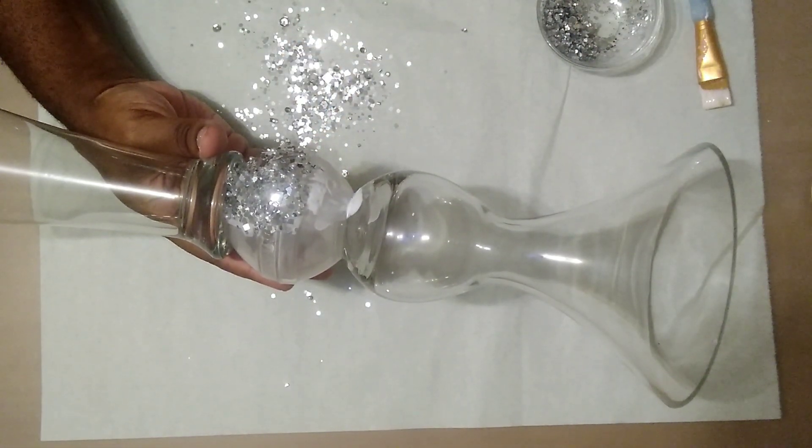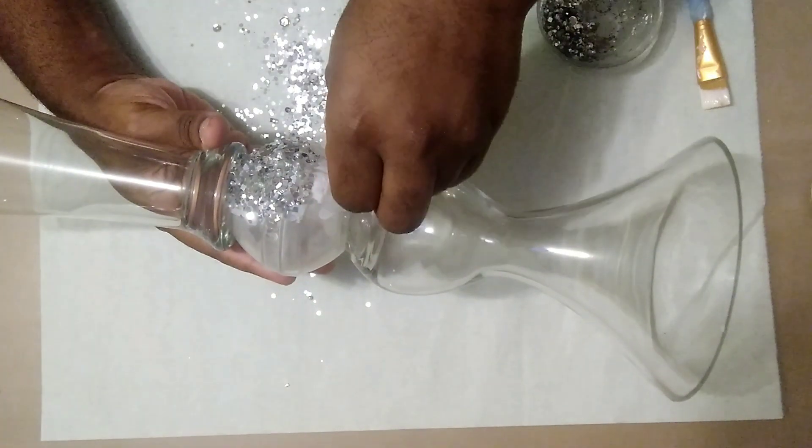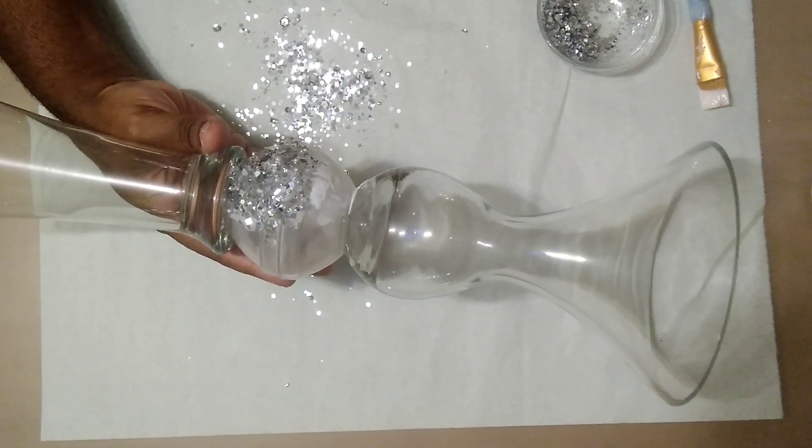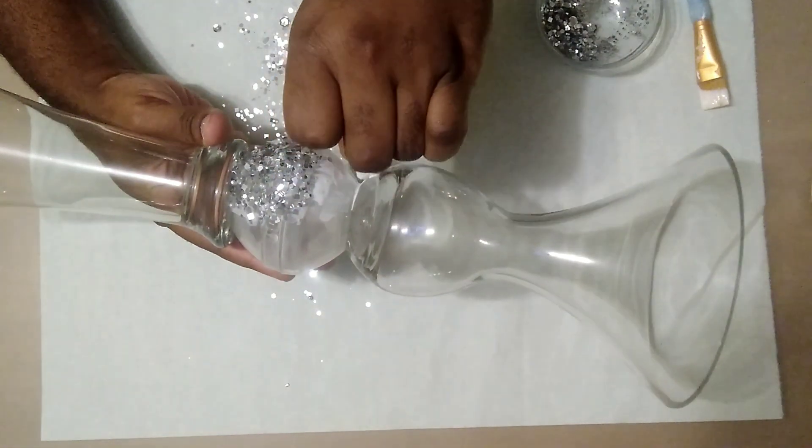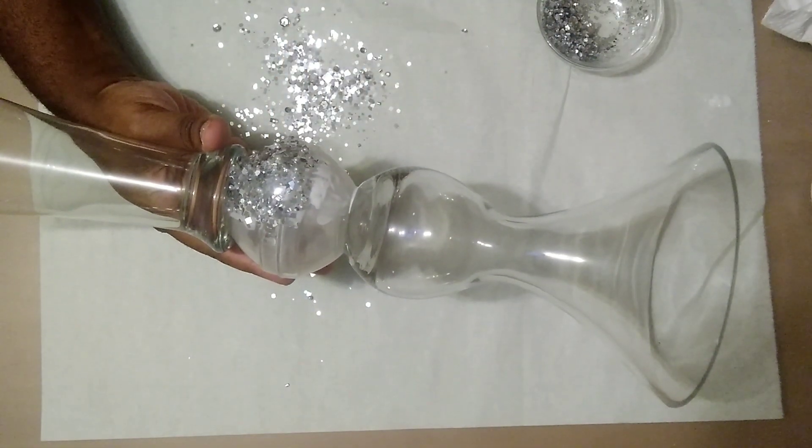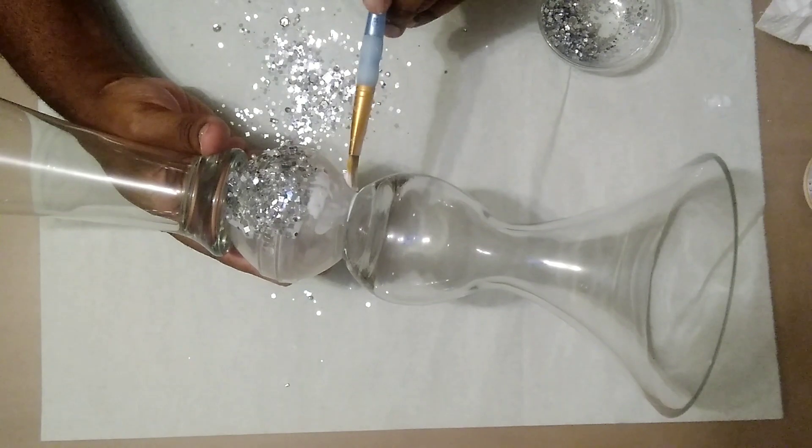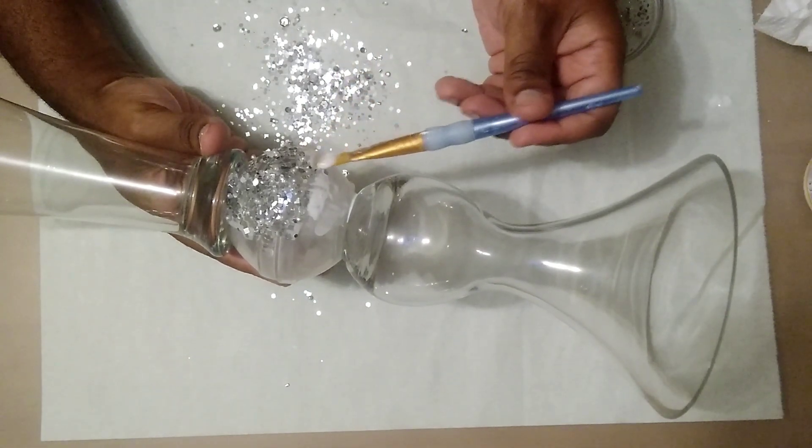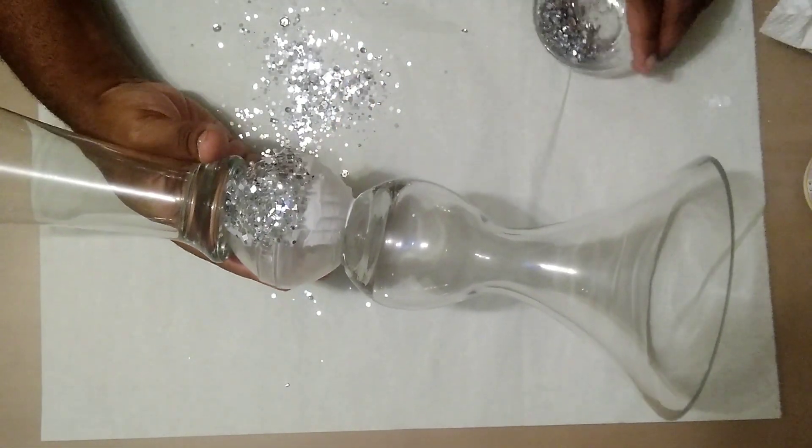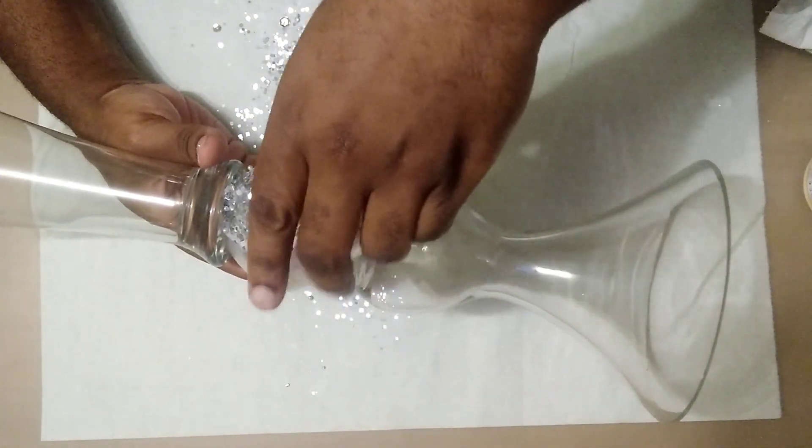Now, be careful when you are using your Mod Podge on your vessel. But if you do happen to get some in a place where it doesn't need to be, just simply quickly wipe it away. And once everything is dry, you can bring in some acetone nail polish. And that will remove it straight away.